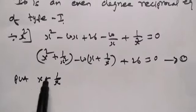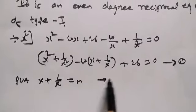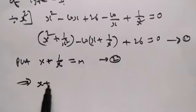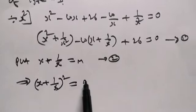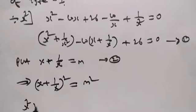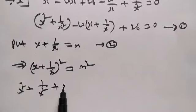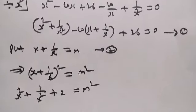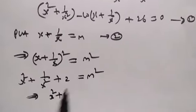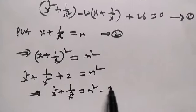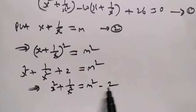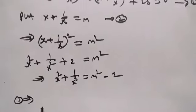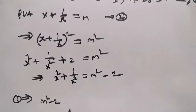Put x plus 1 by x equal to m. For x squared, using a plus b all square formula, a square plus b square plus 2ab. m square equal to x square plus 1 by x square plus 2. Therefore, the value of x square plus 1 by x square is m square minus 2.